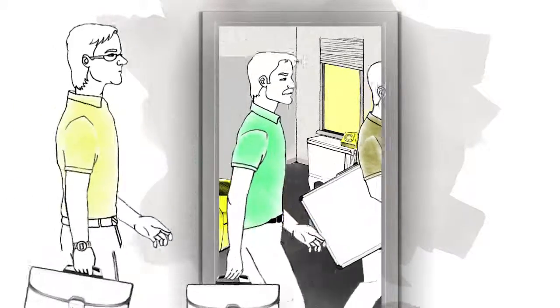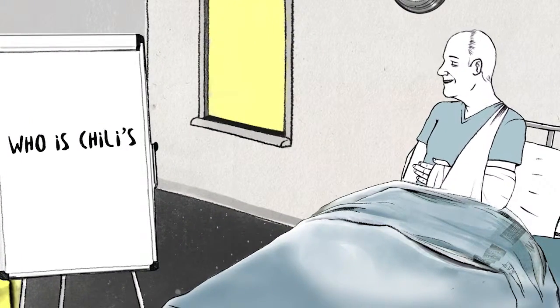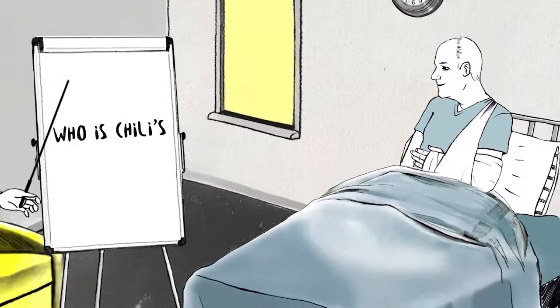When they entered the room, Norman introduced himself and asked an important question: 'What is Chili's? Who are we anyway?' One by one, they began to answer that question.